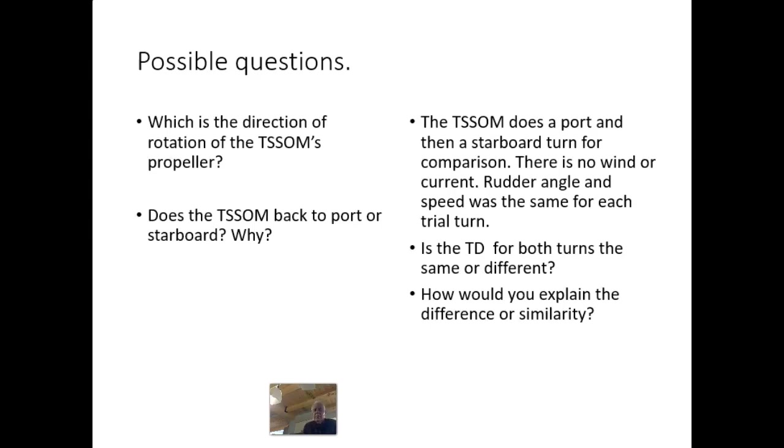Then, next set over here. The T-SOM does a port and then a starboard turn for the sake of comparison. There is no wind, no coming. Rudder angle and speed are the same for each trial turn. Is the turning tactical diameter for both turns the same or is it different? How would you explain that one turn is different than the other turn? Or how would you explain that they are the same? So there's some interesting questions that I'm putting out to you.